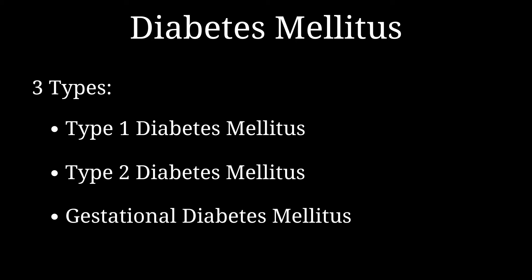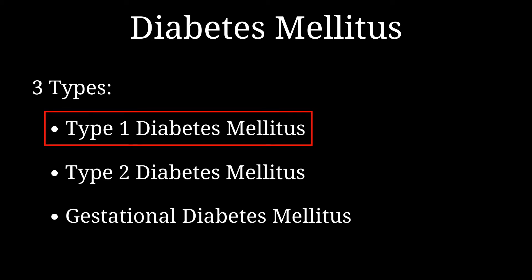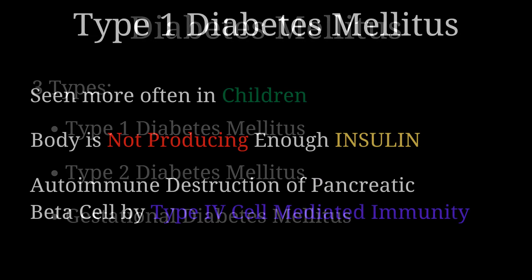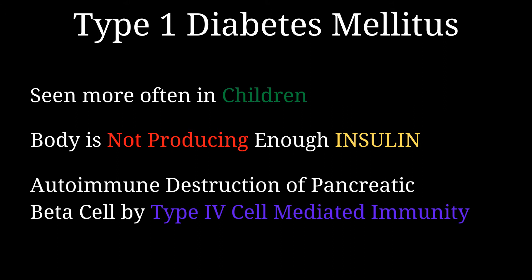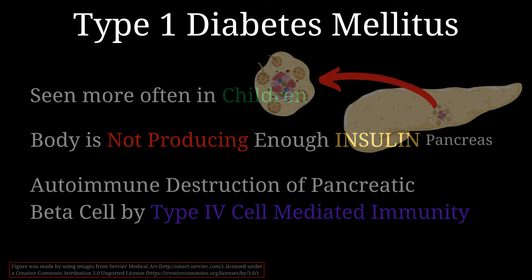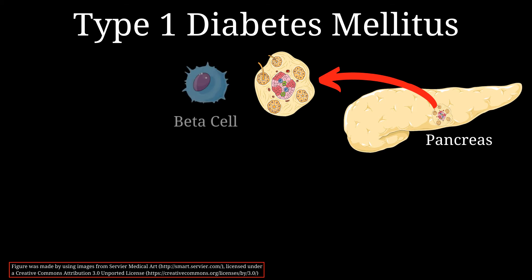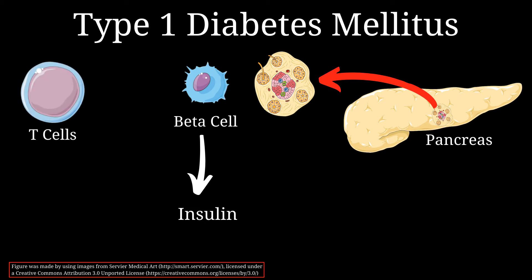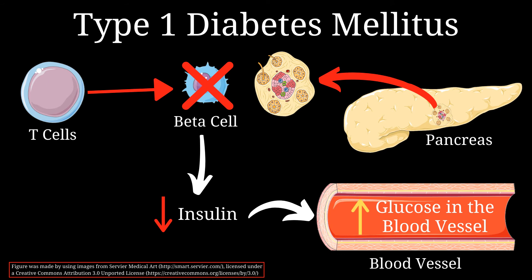There are three main types of diabetes mellitus: type 1, type 2, and gestational diabetes. In this lecture we'll focus on type 1 diabetes mellitus. Type 1 is commonly seen in children. The body does not produce enough insulin in response to rising blood glucose levels, due to autoimmune destruction of pancreatic beta cells by type 4 cell-mediated immunity. The T cells of the immune system mistakenly identify the beta cells of the islets of Langerhans as foreign and attack them, causing their destruction. Over time this leads to a deficiency of beta cells, reducing total insulin levels in the blood, and causing blood glucose levels to abnormally rise, producing the classic symptoms of diabetes.